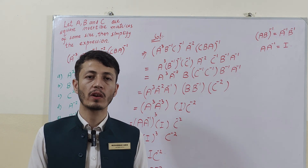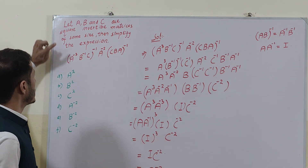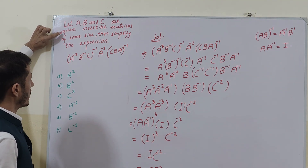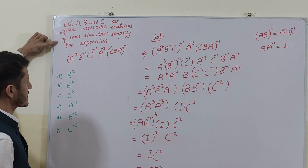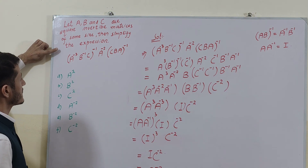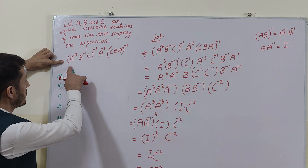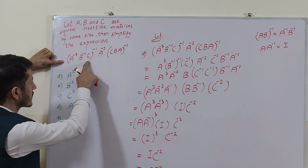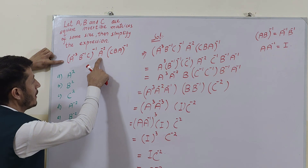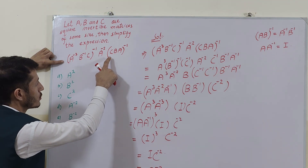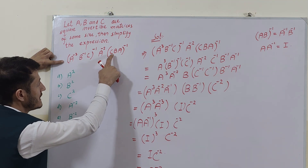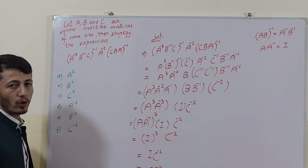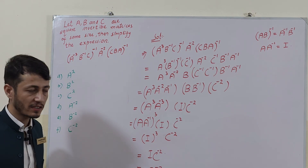The question is from Linear Algebra. Let A, B and C are square invertible matrices of the same size. Then simplify the expression: (A^(-3) · B^(-1) · C)^(-1) · (A^(-2) · C · B · A)^(-1). What will be the possible answer for this expression?